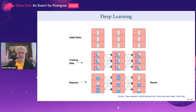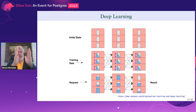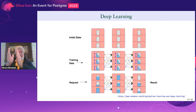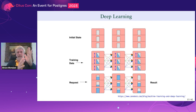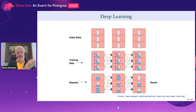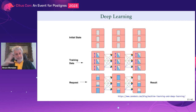Deep learning is where you take a number of machine learning phases and join them together. You see this a lot with image processing and voice recognition, where one phase deals with volume, one with pitch, one with words, one with meaning, and so forth. It's very computationally heavy — there can be millions of these interactions because every tensor connects to every other one, and you're multiplying them as you add each stage.